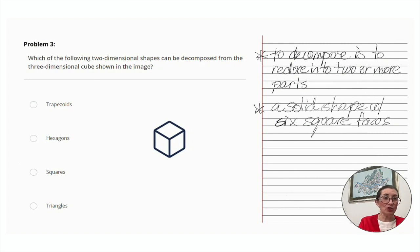Which of the following two-dimensional shapes can be decomposed from the three-dimensional cube shown in the image? Now let's look at decomposed. What does that mean? To decompose is to reduce into two or more parts. And what is the definition of a cube? A cube is a solid shape with six square faces.